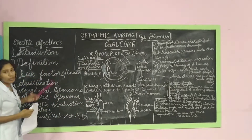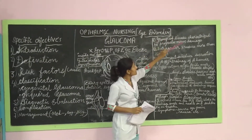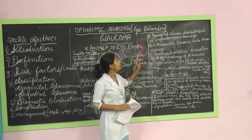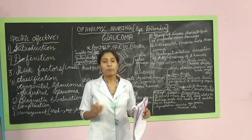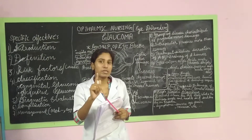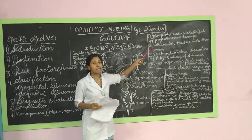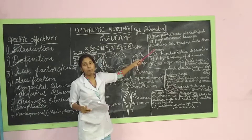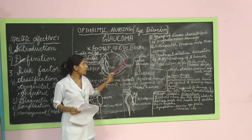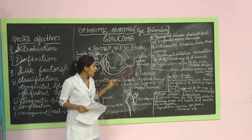The definition of Glaucoma is: a group of diseases characterized by progressive optic nerve damage, intraocular pressure more than 22 mmHg — that means millimeter of mercury — and optic nerve damage caused by increased intraocular pressure. Due to optic nerve damage, blindness will occur.